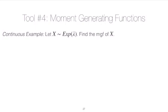In class we introduced moment generating functions and did a discrete example where X was binomial NP and we wanted to find the moment generating function of X. So let's try a continuous example now.